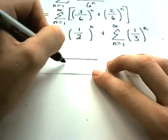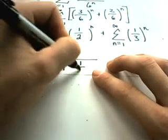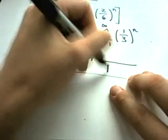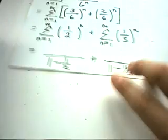For this part, my common ratio is 1 half, so I'll have 1 minus 1 half. For the other one, my common ratio is 1 third.